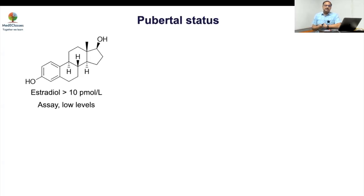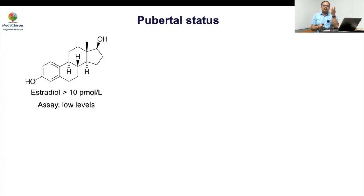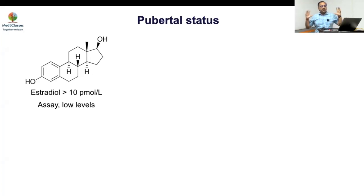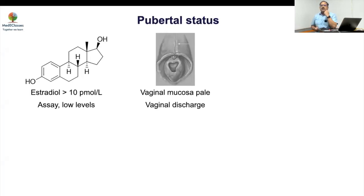GC-MS is preferred because it identifies molecules by both structure and mass-to-charge ratio — it looks at the whole molecule. Immunoassays only look at a small epitope, like blind people examining different parts of an elephant. Therefore, GC-MS is more specific. Since estradiol is unreliable at low levels, clinical parameters are very important.